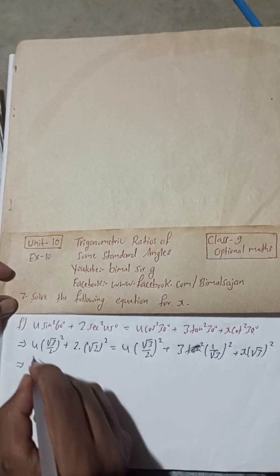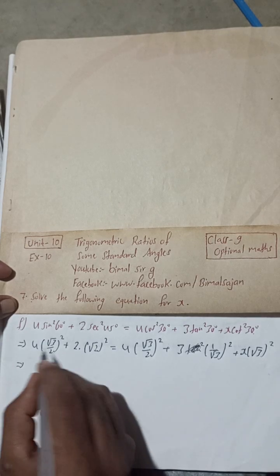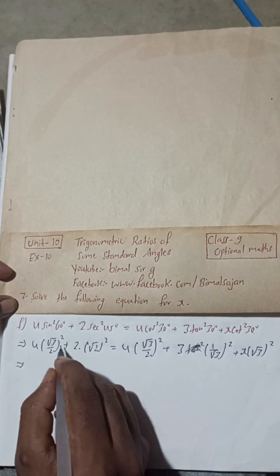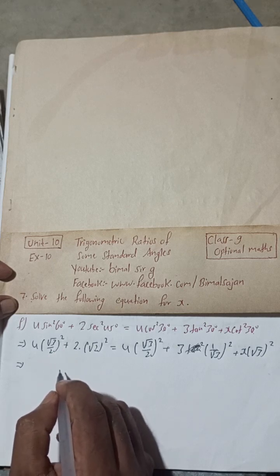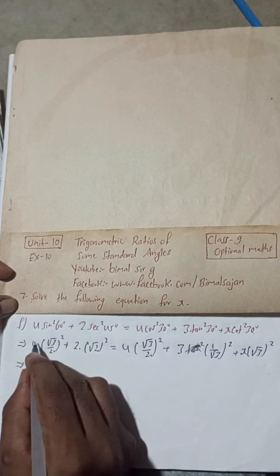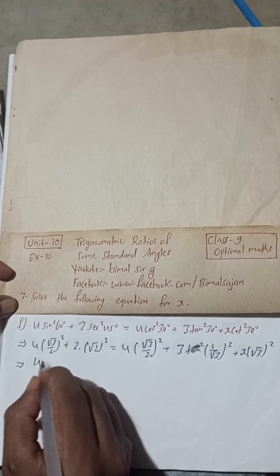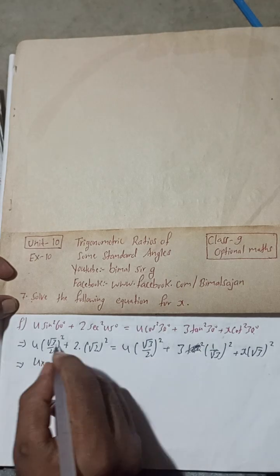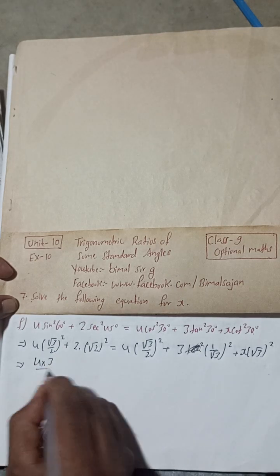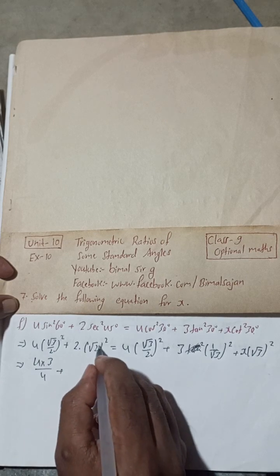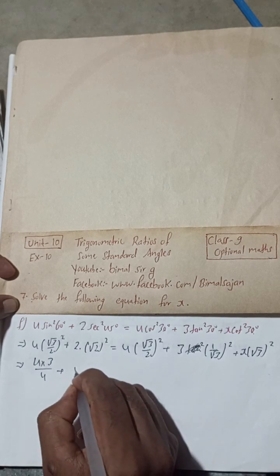4, root 3 square is 3, so 3 times 4 is 12. Otherwise, this is 4 and root 3 square is 3, and 2 times 2 is 4, plus root 2 square is 2, and 2 times 2 is 4...